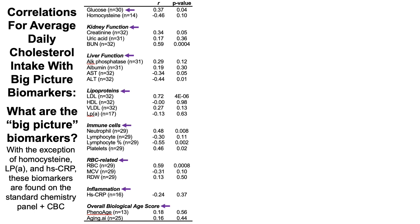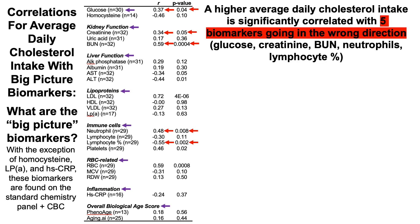Looking at correlations for average daily cholesterol intake with these big picture biomarkers: higher dietary cholesterol intake is correlated with higher glucose, and as we know, higher glucose is potentially bad for aging — indicated by a red arrow going in the wrong direction. Similarly going in the wrong direction are higher levels of creatinine and blood urea nitrogen. Also going in the wrong direction are neutrophils, which increase during aging, and the percentage of lymphocytes, which declines during aging. So in sum, a higher average dietary cholesterol intake is significantly correlated with five biomarkers going in the wrong direction.